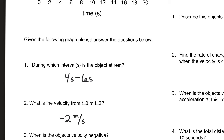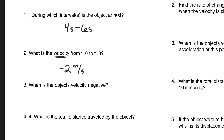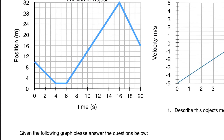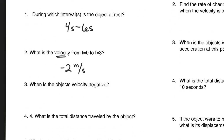Velocity requires direction, so you must include the positive or negative sign — or say forwards or backwards. If you don't, I'm not convinced you know it's a vector. When is the object's velocity negative? In this graph there's more than one place: zero to four seconds and sixteen seconds to twenty seconds. Some versions of the test may only have one interval where the velocity is negative.